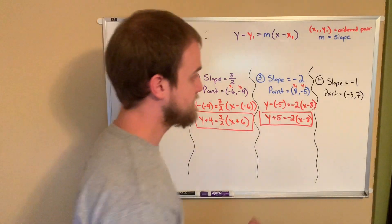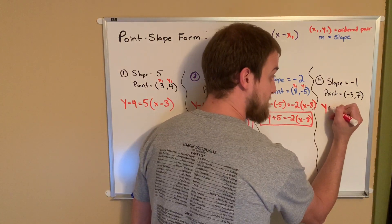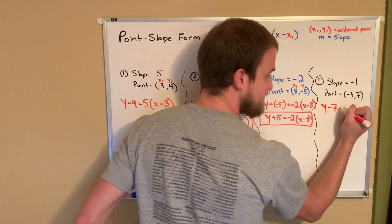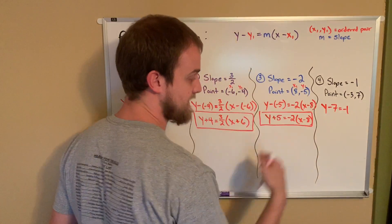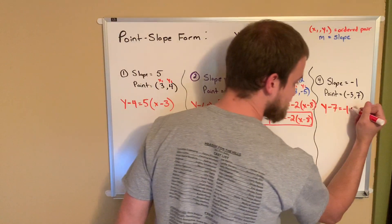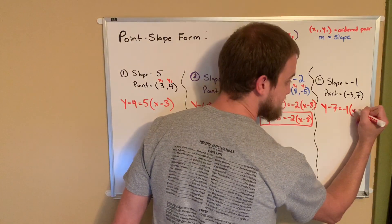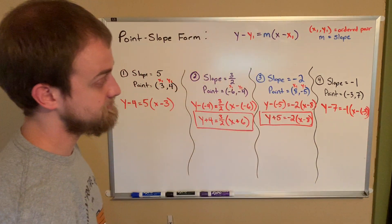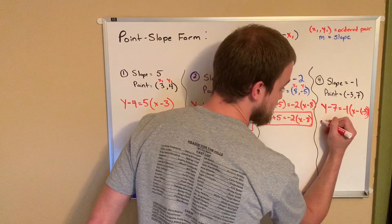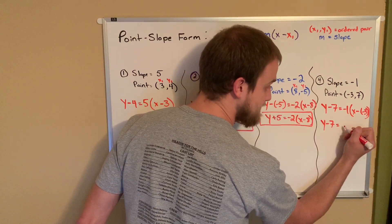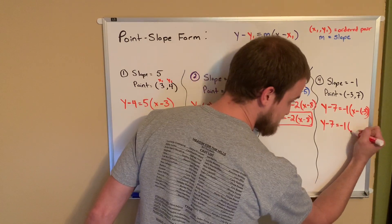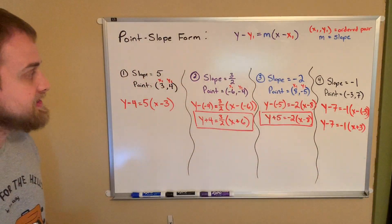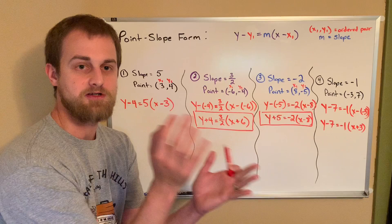Last but not least, same idea happens again. Y minus my y sub 1 is 7. So I don't have that double sign thing happening. That's good. Equals negative 1. That's my slope outside of my parenthesis times the quantity of x minus, oh, looks like I'm going to have the double negative here. So before I proceed, it's good taste to clean this up. Y minus 7 is okay. Equals negative 1 times the quantity of x plus 3.